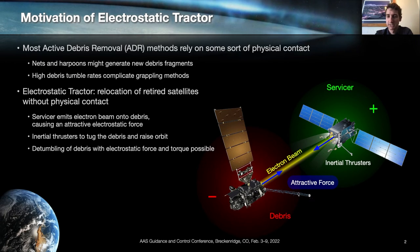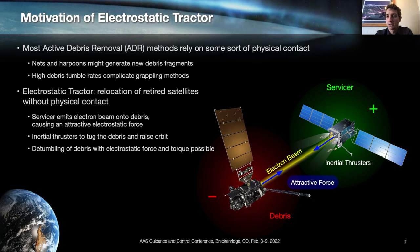The way it works is that you have an electron gun attached to a servicing satellite and that electron gun is aimed at the debris. Due to the emission of electrons the servicing satellite will charge positive while the debris charges electrostatically negative due to the accumulation of electrons. These opposing electrostatic potentials result in an attractive electrostatic force that can be used to tuck the debris away from geostationary orbit into a graveyard orbit.